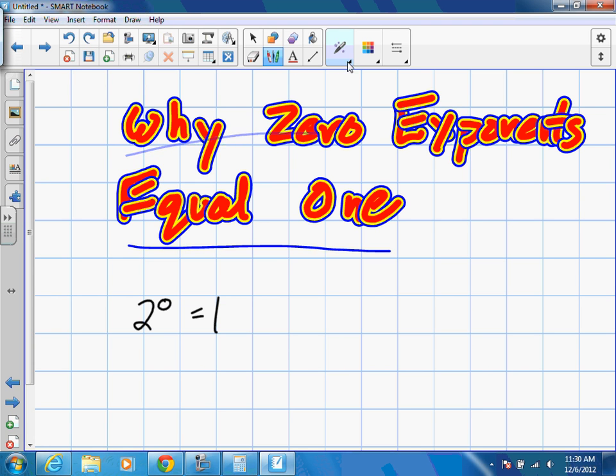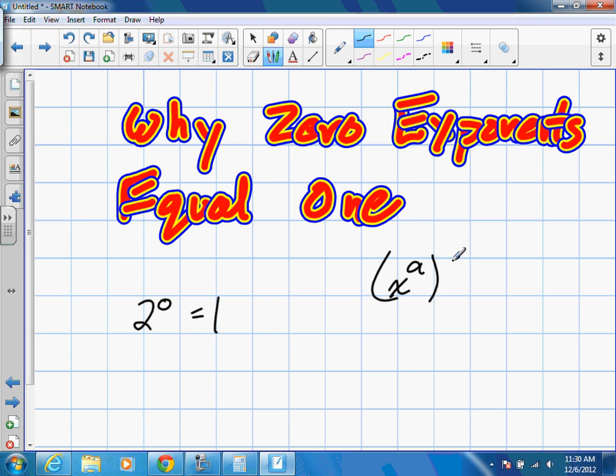Now, we already learned a couple rules, which I know you guys know. You guys know the rule that when we have similar bases and we're multiplying, so multiplying powers, we just add them together.